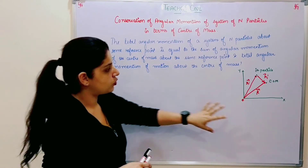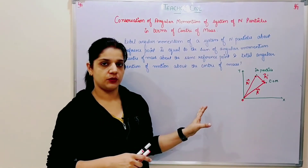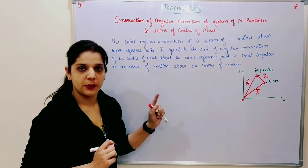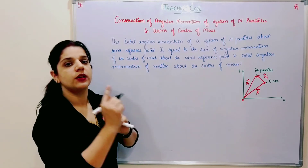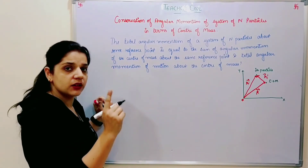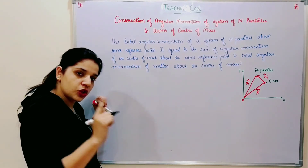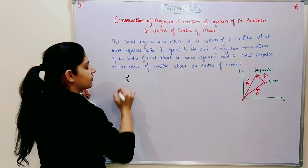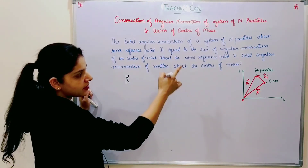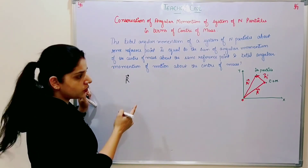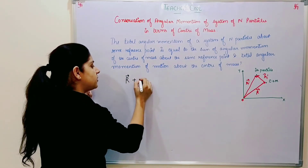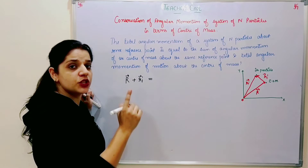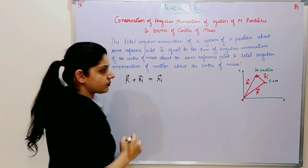We will generalize and understand using vector addition, which we studied in class 11 and 12. If we have three vectors forming a triangle, then A plus B equals the third vector. Similarly, capital R vector goes from origin to center of mass, Ri-prime goes from center of mass to the i-th particle, so their sum gives the direct position vector: R + Ri' = Ri.